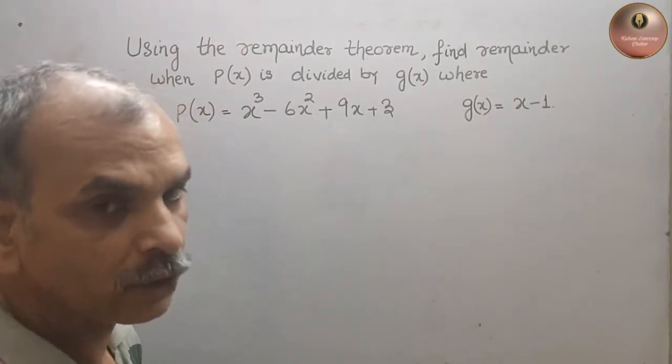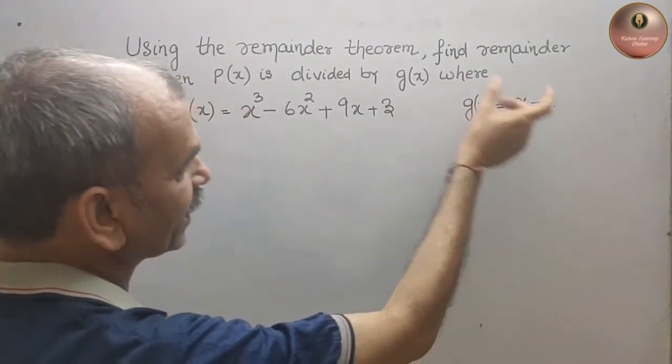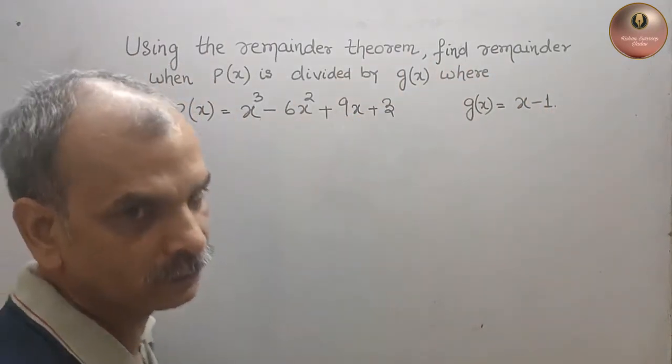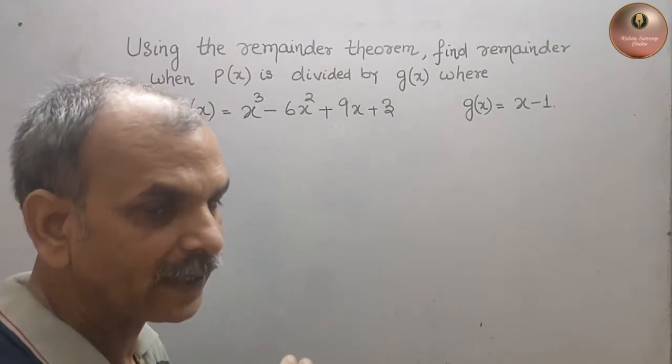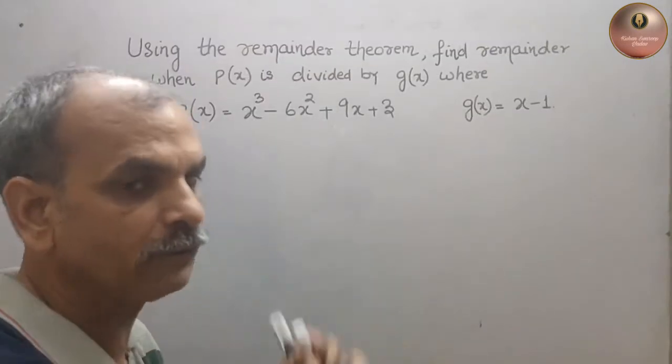So what is your remainder theorem? We have to find out whether this is a factor of this or not. So that is a shortcut method, that is your remainder theorem. Otherwise you have to go for a long division method.